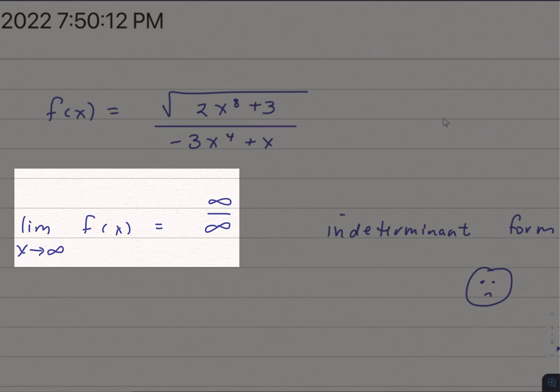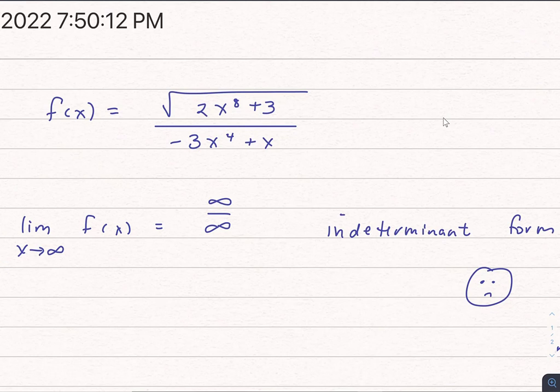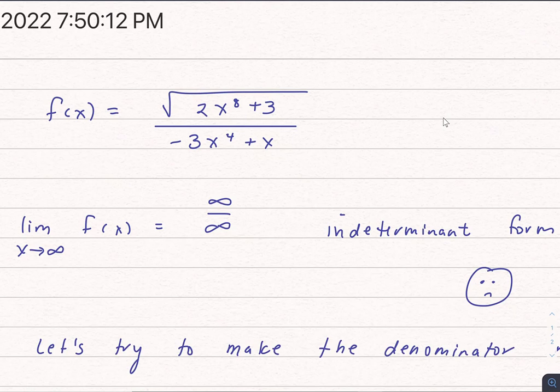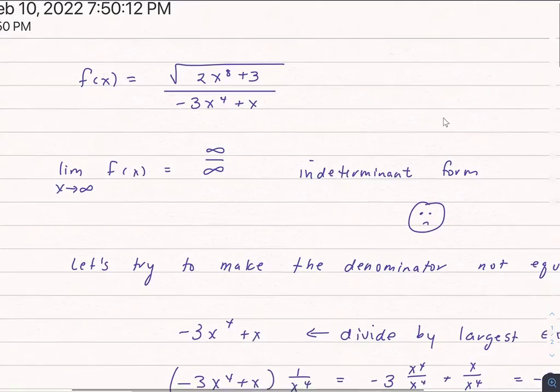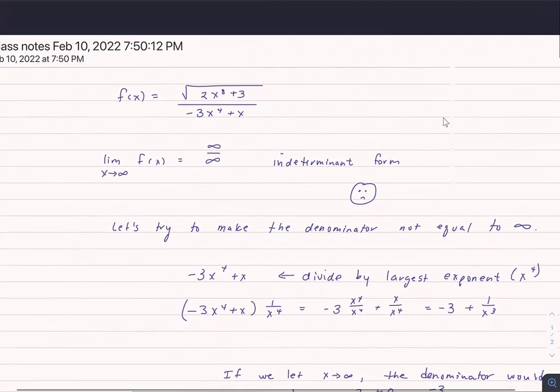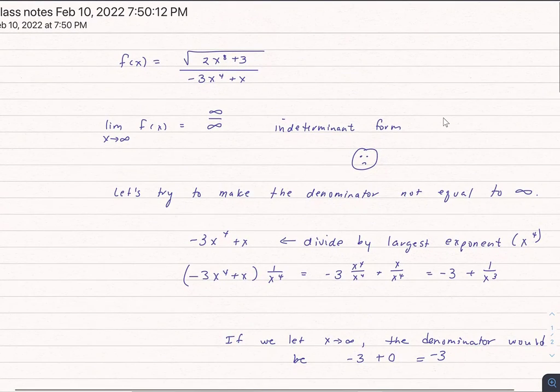Well, maybe infinity over negative infinity. But even so, it's going to be in indeterminate form, which makes us sad because we have to do more work. So what am I going to do first? Let's try to mess around with the denominator and let's try to make that denominator not equal to infinity.